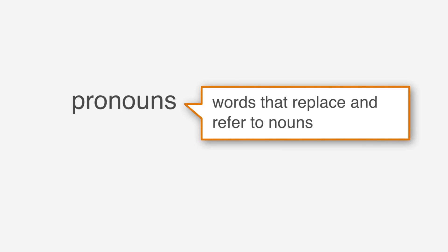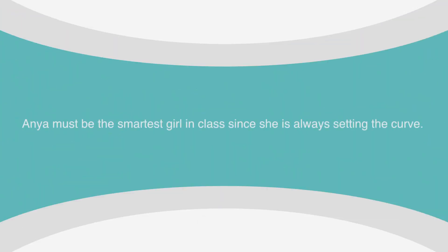Pronouns are words that replace and refer to nouns. For example: Anya must be the smartest girl in class since she is always setting the curve. In this sentence, she is a pronoun referring to Anya. It allows us to write the sentence without stating Anya's name twice.